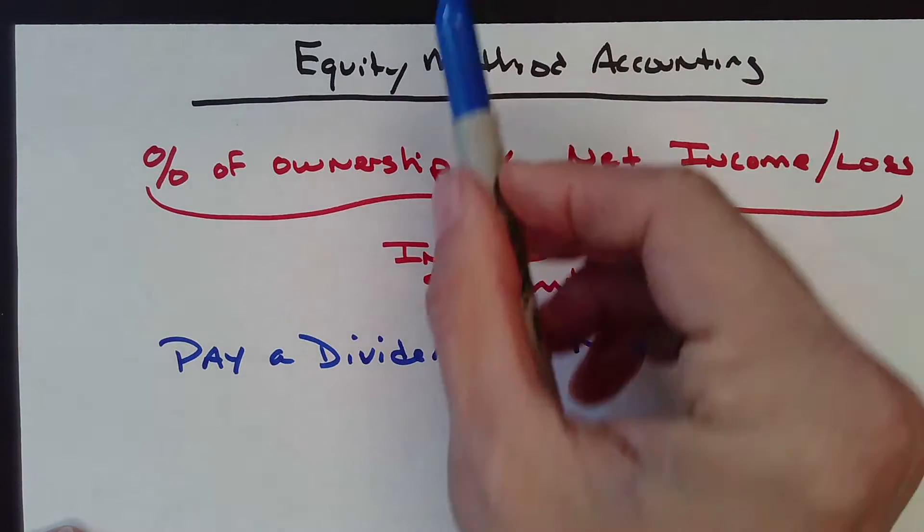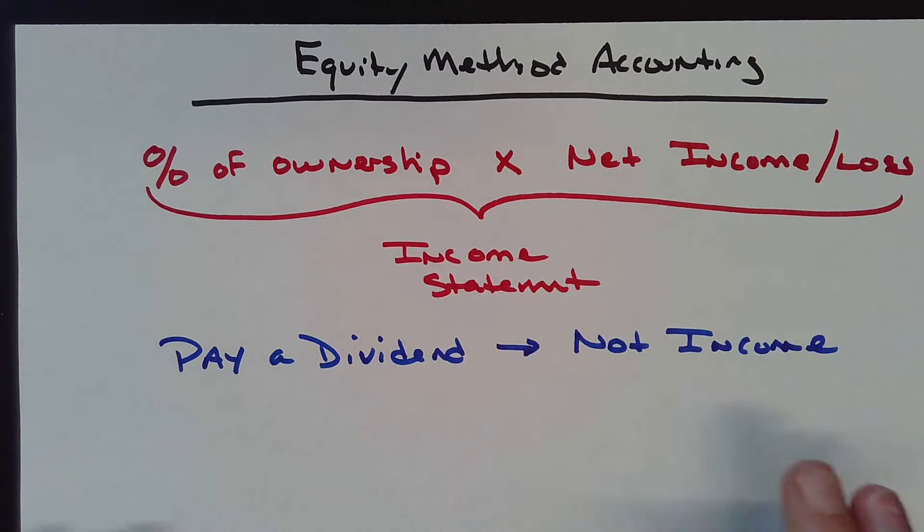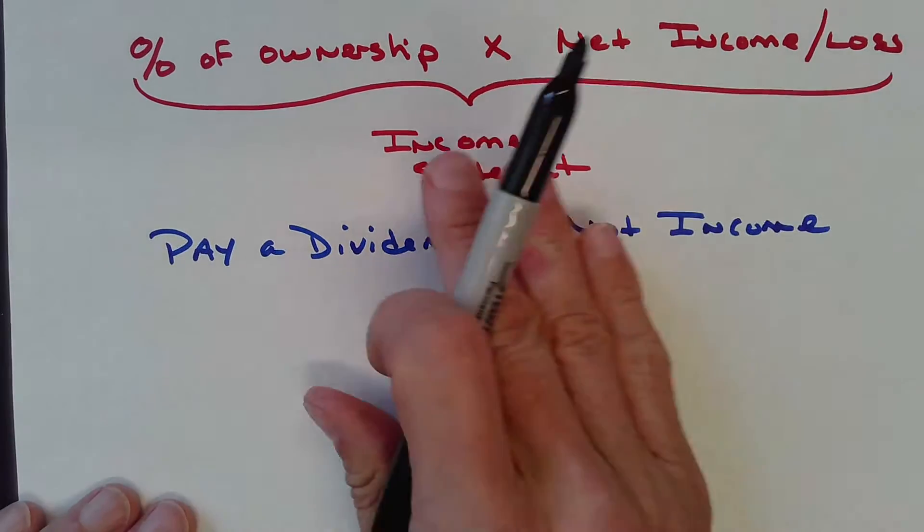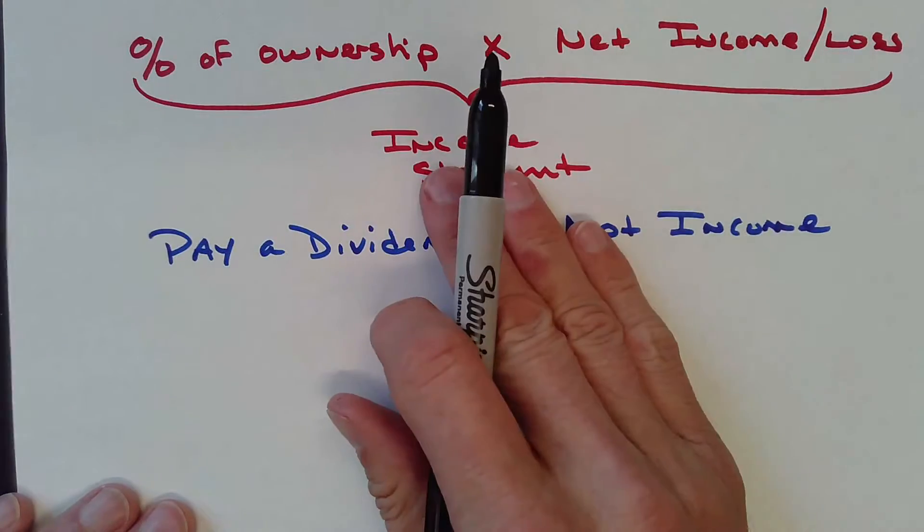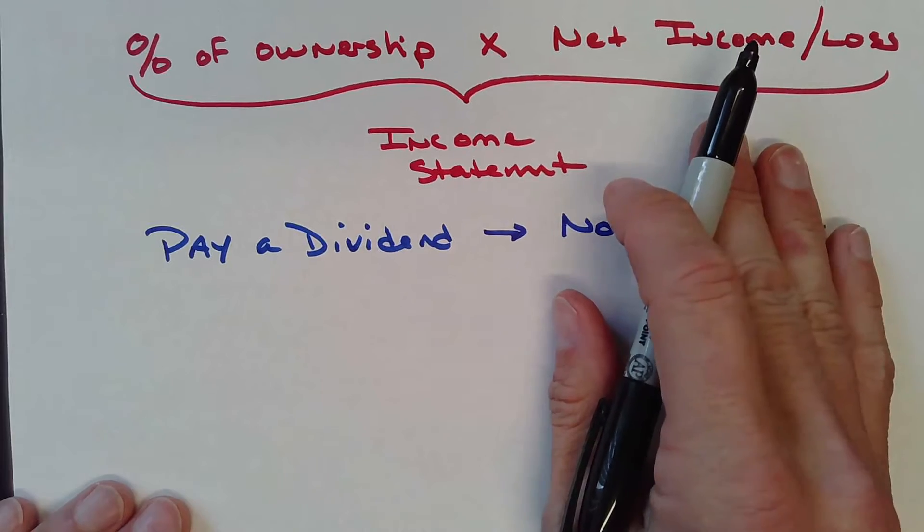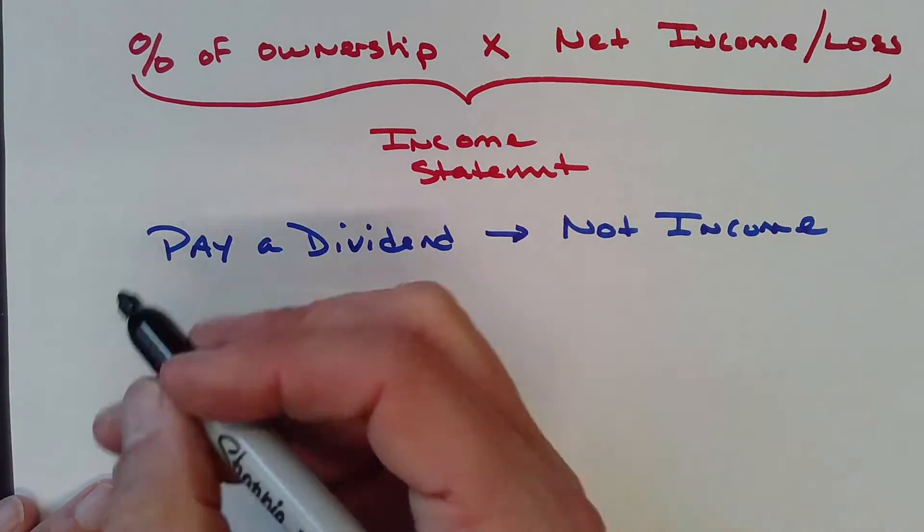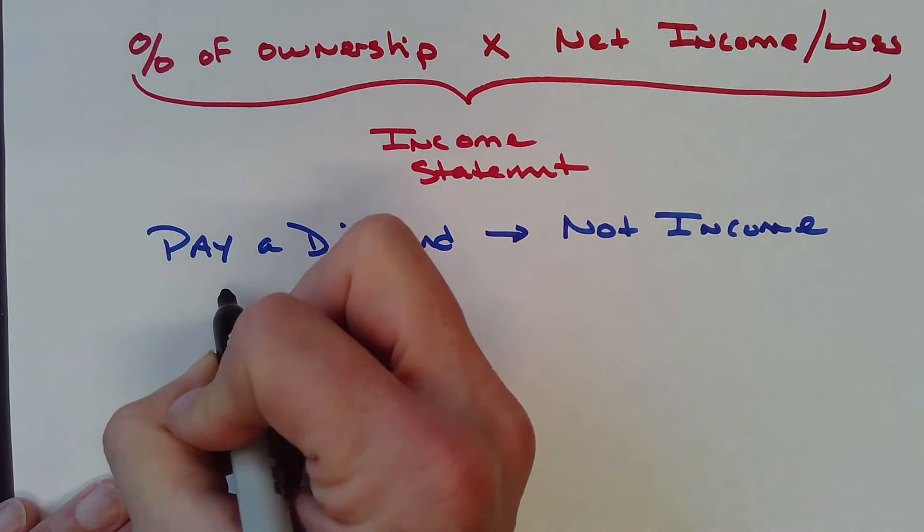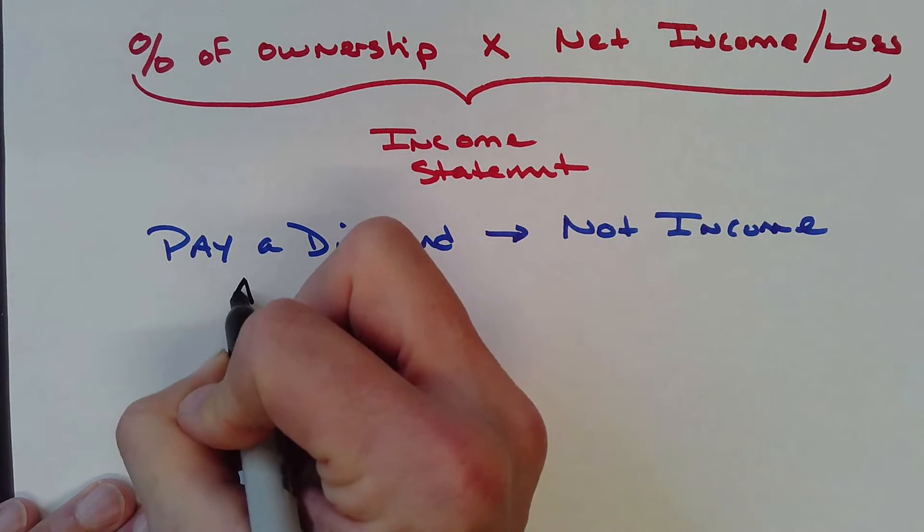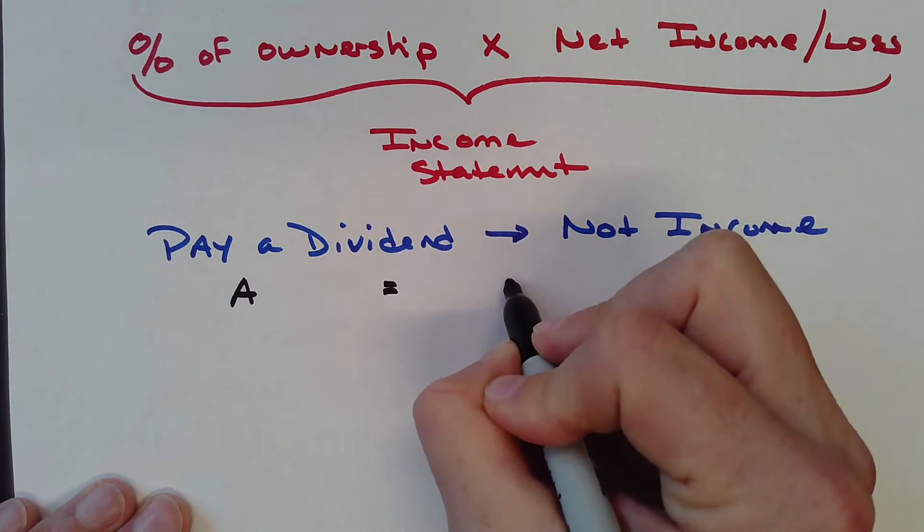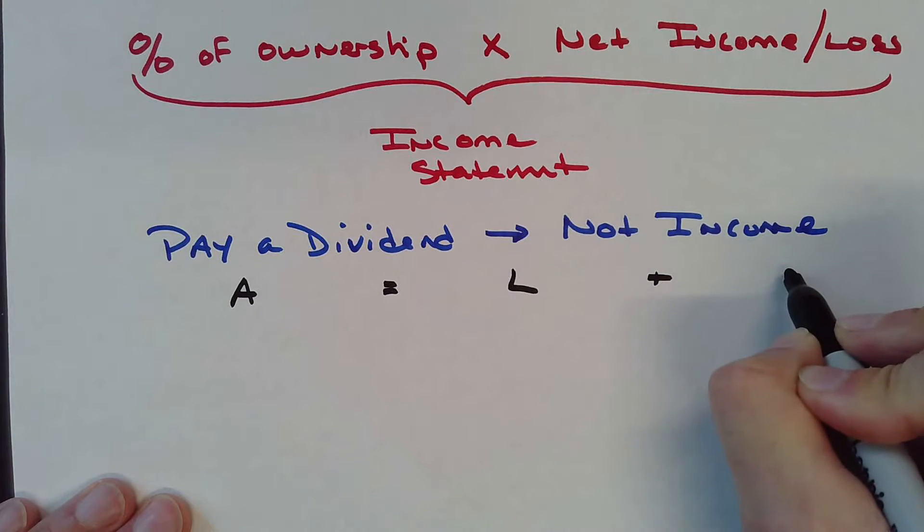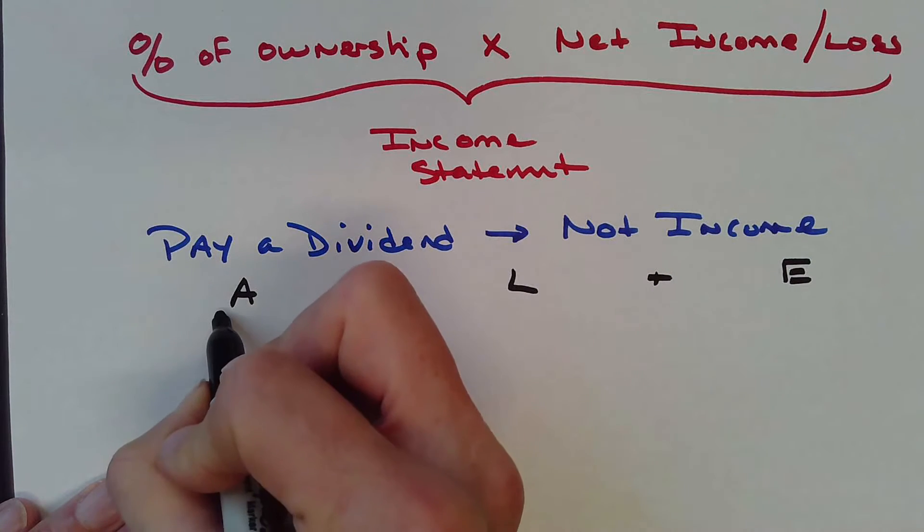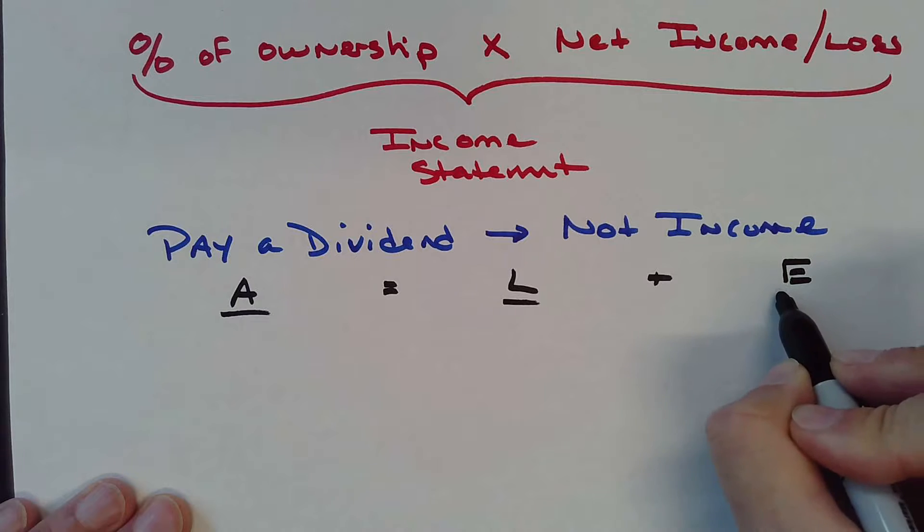Let's do a quick example. Say I bought 25% of a particular organization and paid a million dollars for it. I purchased it with cash, so we'll use assets equals liabilities plus equity.